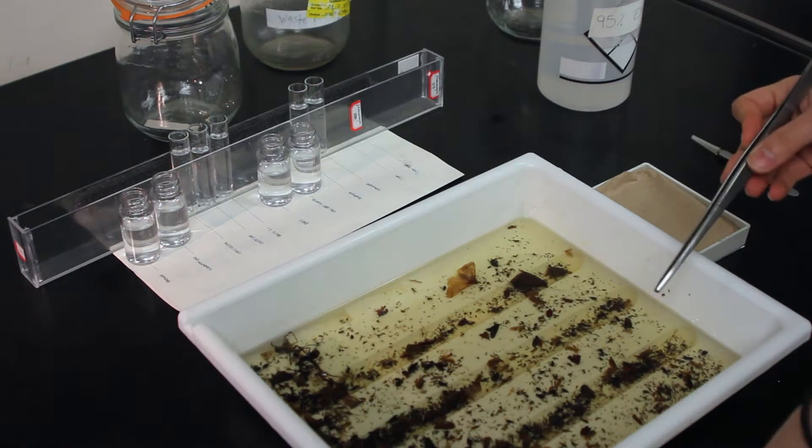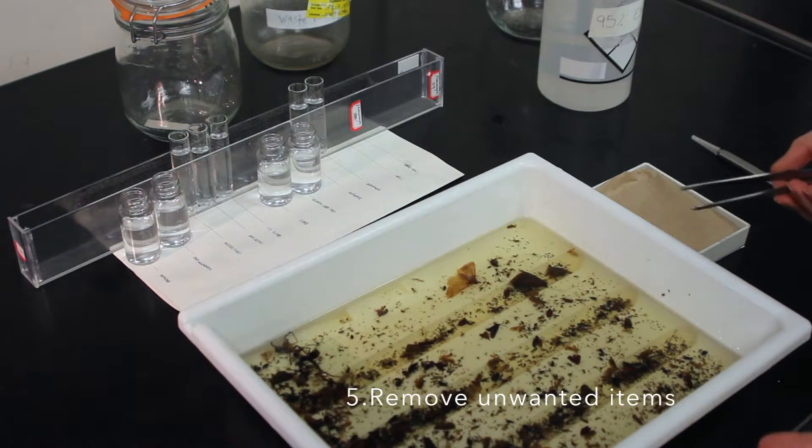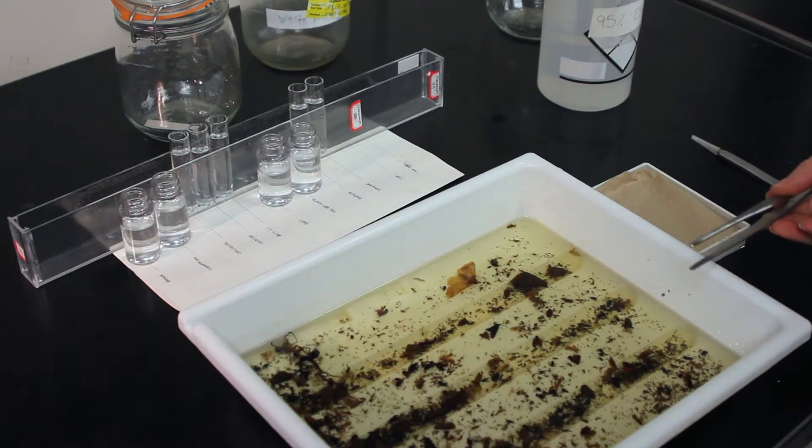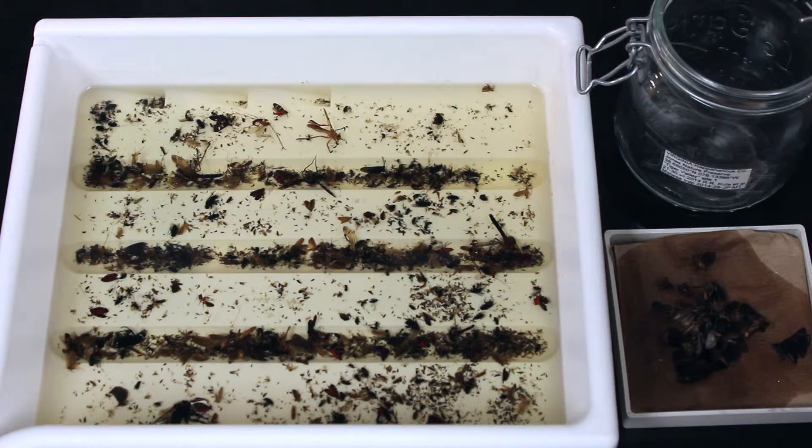Our next job is to remove any debris and vegetation that are going to get in the way when we're sorting our sample. Once all the lepidoptera have been removed, we focus on all non-target macro organisms that we still want to conserve. And they'll go into the externally labeled bale top jar.